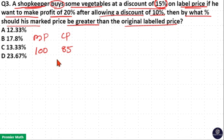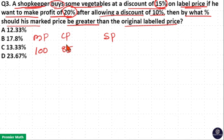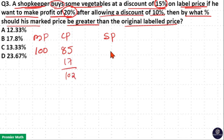Now, after buying this 100-rupee MRP product at 85 rupees, he wants to sell this product at 20% profit, which means the selling price is 20% more than 85 rupees. 10% of 85 is 8.5, so 20% is 8.5 × 2 = 17. Therefore, 85 plus 17 equals 102. So the selling price is equal to 102 rupees.